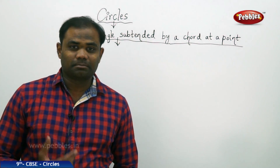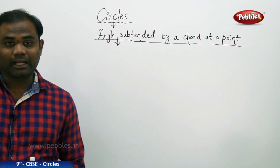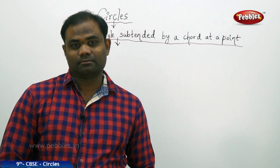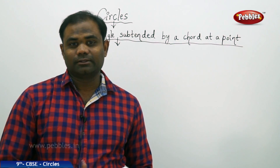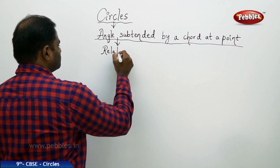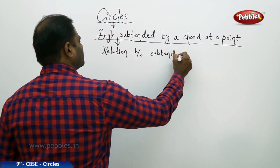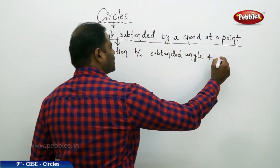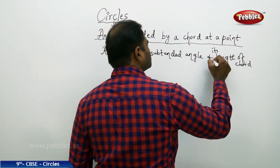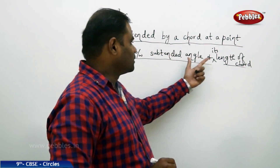Now that we have seen the angle subtended by a chord at a point, let us see the relation between the length of the chord and its respective angle subtended at the circle center or any of its circumference. This session is about finding the relation between the length of the chord and angle subtended. Let us see how we can relate the subtended angle and the length of the chord.